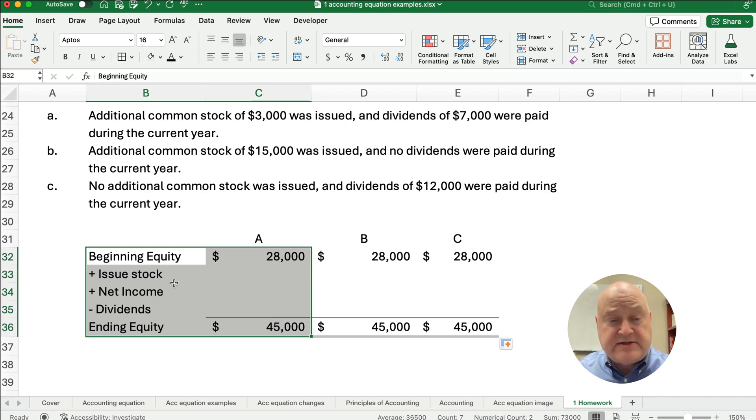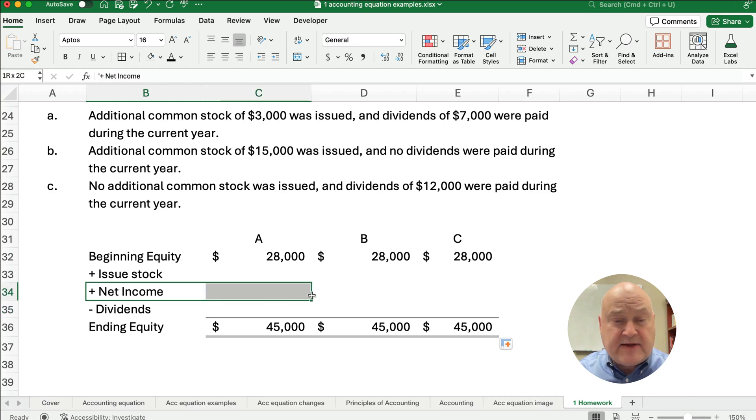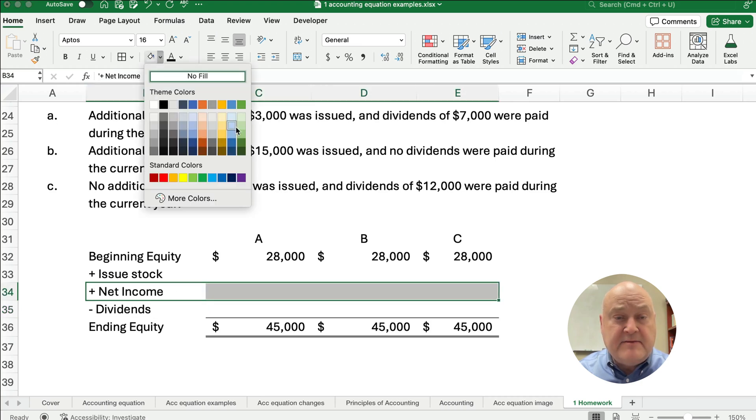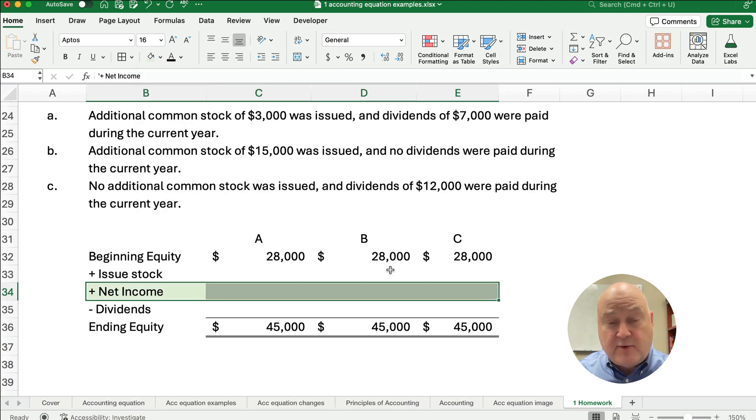So we're going to have to work our way backwards if we have stock and we have dividends. Now, we're trying to calculate this middle number. I'm going to highlight this. We're trying to calculate the middle net income or net loss. Depends on what we have.